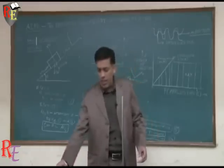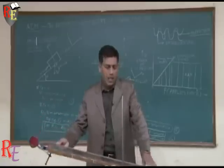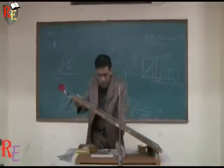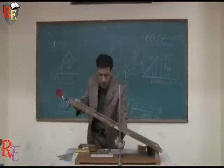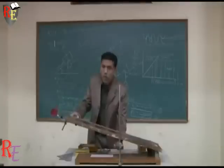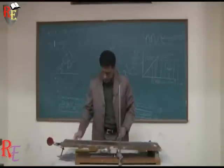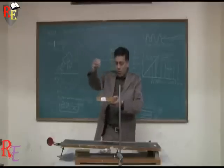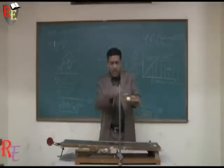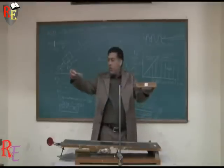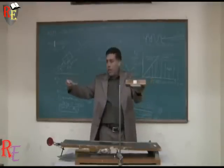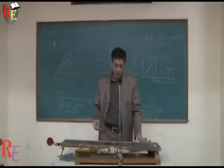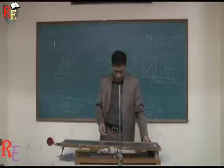The first piece of apparatus is the adjustable incline, which can be inclined to any suitable position. The second is the trolley, to which a pan is attached and on which we can apply certain weights. The third is the weight box.